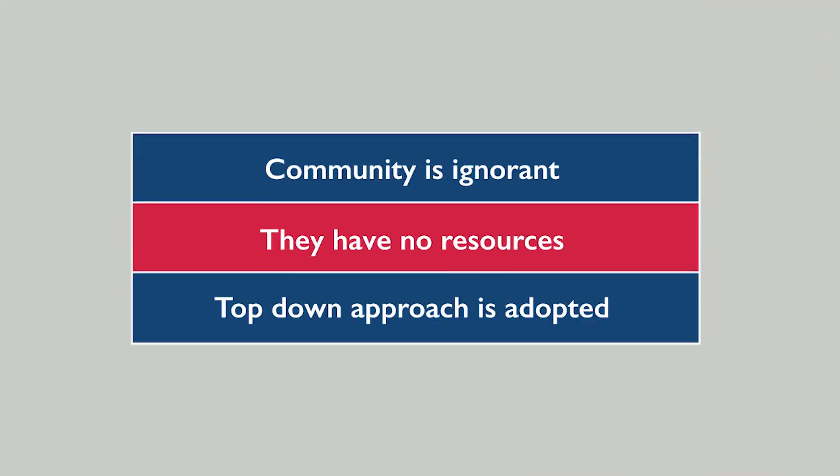The second mental model that the design team observed is that the community is ignorant and has no resources, and then a top-down approach is adopted where cultural assets and cultural capital — like local informal institutions, leadership, and local resources — are ignored.